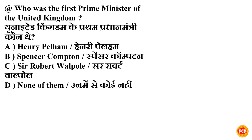Next question: who was the first Prime Minister of the United Kingdom? United Kingdom ke pratham Pradhan Mantri kaun the? Option C is correct — Sir Robert Walpole. United Kingdom ke pratham Pradhan Mantri the Robert Walpole.